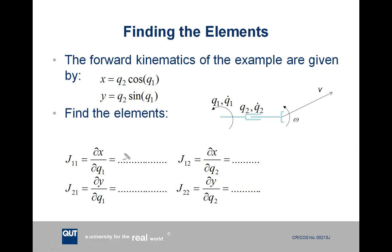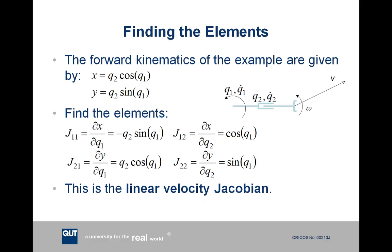So first up, what is dx/dq1? So dx/dq1, q1 is inside the cos, so this is negative q2 sine of q1. dx/dq2, well that's just cos of q1. dy/dq1, well dy/dq1, q1 is in the sine, so we get q2 cos q1, and dy/dq2, well q2 is just multiplied by the constant sine q1, so we just get sine q1. And if you look at the answers on the next slide, you can see we've calculated them correctly. So we've worked out the four elements of the linear velocity Jacobian.